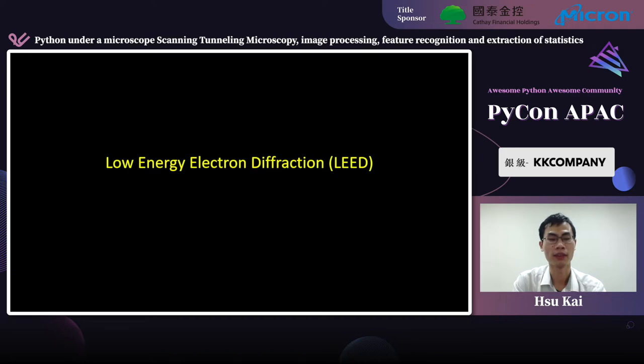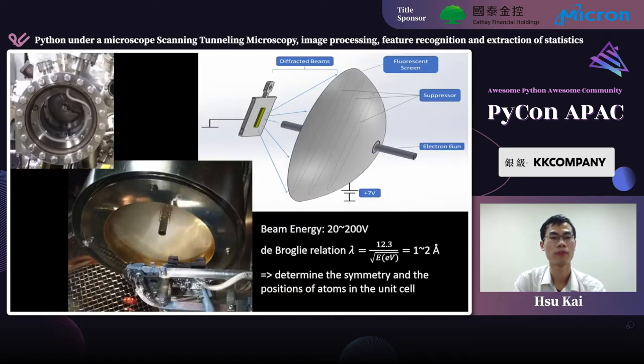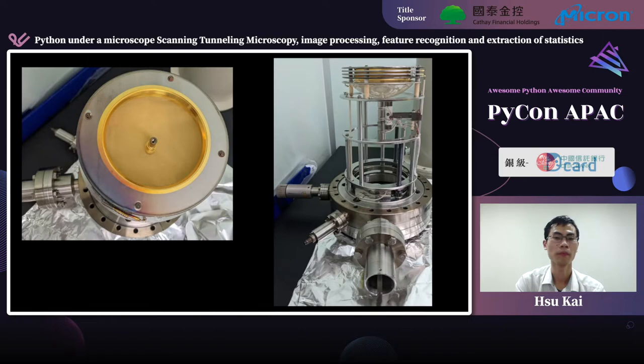Let's talk about the next technique, low-energy electron diffraction. Here is our LEED system. It is also an ultra-high vacuum system. The camera is outside in air and focuses on the phosphorous screen. On the top right corner is a cartoon picture of the setup. The electrons coming out from the electron gun have wavelength comparable to atomic spacing and can be elastically scattered by the atoms in the top few layers of the sample. Such LEED penetration can be used to determine the symmetry and positions of atoms in the unit cell. So, basically, we can view LEED image as the Fourier transform of the atomic resolution image from STM.